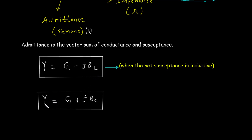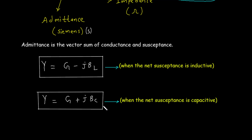Admittance Y = G + jBC, which applies when the net susceptance is capacitive. BC represents capacitive susceptance.